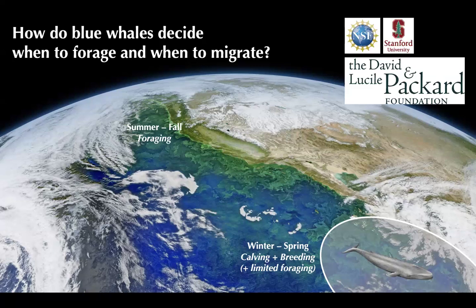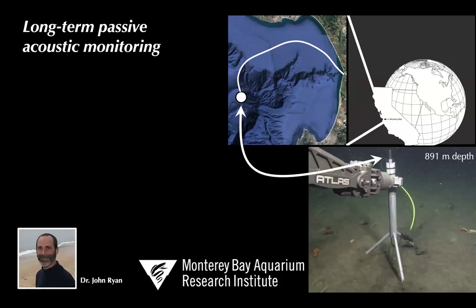To understand how blue whales make this critical decision, one of the key tools I've leaned on is a long-term passive acoustic monitoring program in the Monterey Bay region, led by Dr. John Ryan at the Monterey Bay Aquarium Research Institute. This is enabled by incredible marine infrastructure: an undersea cabled observatory just outside the Monterey Bay Submarine Canyon at 891 meters depth, connected back to our lab by a cable just over 50 kilometers long. It gives us a constant data feed of the soundscape and has been recording nearly continuously since summer 2015 at a sample rate of 256 kilohertz.